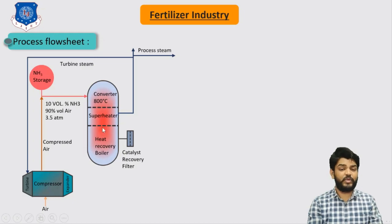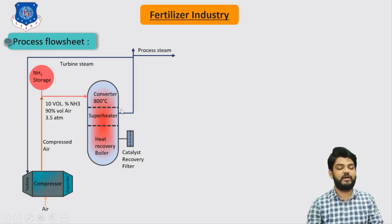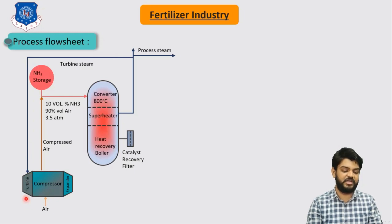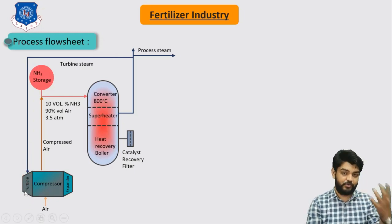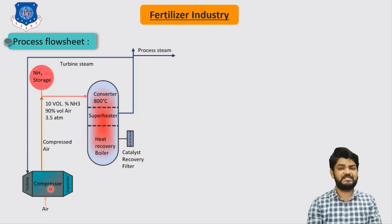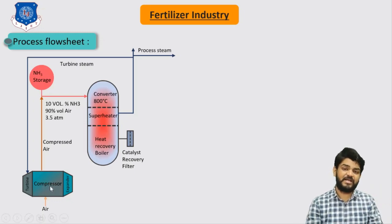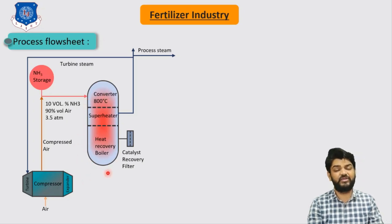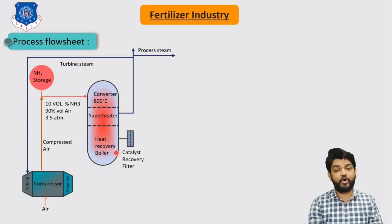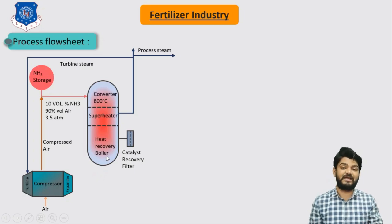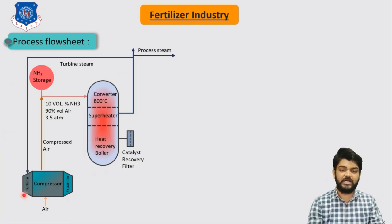The steam from the superheated section of the shell side is sent directly to the turbine section. This turbine is rotated with the help of the product steam and it runs the compressor. We do not require any external source of energy to run our compressor, as it is run with the help of steam generated from this reactor. This reactor is the heart of the entire process — it serves as converter, superheater, and heat recovery boiler, converting water into steam that runs the turbine and compressor.